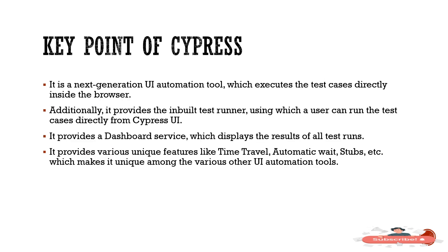Key points of Cypress: it is the next generation UI automation tool which executes test cases directly inside the browser. It provides an inbuilt test runner, allowing users to run test cases directly from the Cypress UI. It provides dashboard services which display the results of all test runs. It provides various unique features like time travel, automatic wait, test stubs, and more, which make it unique among other UI automation tools.